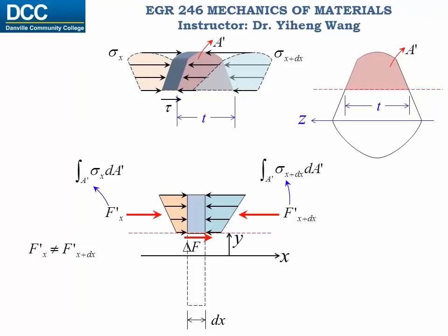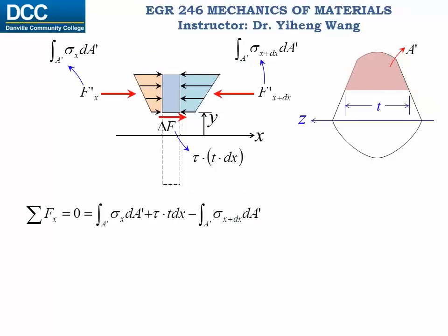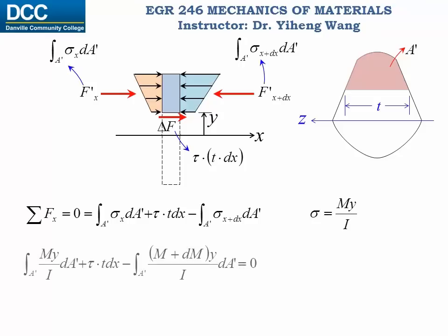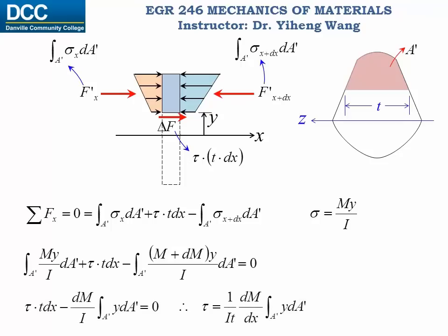That corresponds to a shear stress at the bottom. If we assume this shear stress follows a uniform distribution, then ΔF equals τ times the area of the bottom, which equals τ times t (the width of this segment) times dx. Therefore, we can write the force equilibrium equation along the x-direction for this top segment. The normal stress caused by bending at any given position y is determined by the flexure formula. Substituting that in, we solve for τ to be (1/t)(dM/dx) times the integration term.